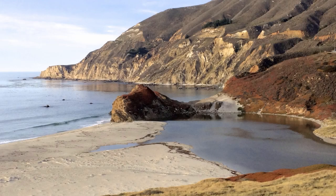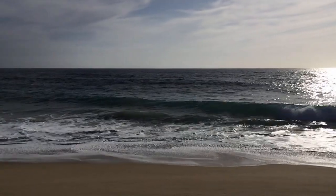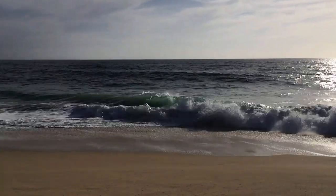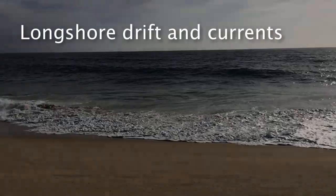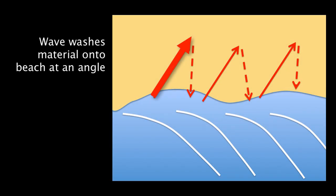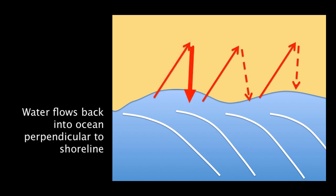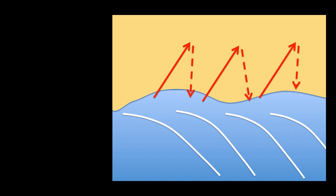Whenever material is eroded from someplace it has to go somewhere, and so these deposits may or may not end up on the coast and contribute to the coastal geometry. How and where material gets deposited depends on two major things: longshore drift and longshore current. Drift is where waves come in at an angle, washing material onto the beach at that same angle, and as the water flows back into the ocean perpendicular to the shoreline, beach sand is progressively moved down the coast in a zigzag pattern.